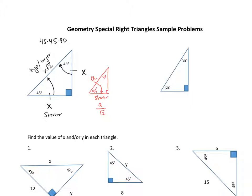That's the 45-45-90 triangle. Why does that work? You can prove it with the Pythagorean theorem. If this piece is x, then x squared plus x squared equals the hypotenuse squared, giving us 2x squared equals c squared. Taking the square root, c equals the square root of 2x squared, which simplifies to x times the square root of 2. That's why that pattern works.